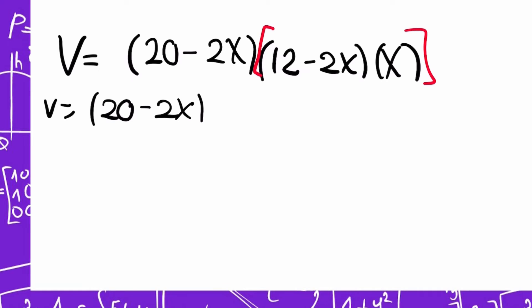So I have volume equals 20 minus 2x, and here first I have 12 multiplied by x, this is 12x. Now I have minus 2x times x. The answer of this is minus 2x squared. And now I have to do this operation because this is multiplied.